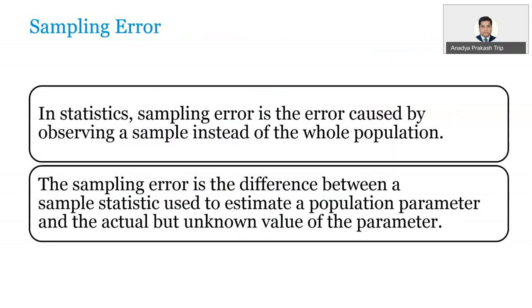We may be a little bit far or closer — up and down — from the true reality. This little bit of difference is due to the sample. If we had evaluated the whole population, we may have been able to pinpoint the actual reality. Due to the sample, if we are a little bit up or down, far or closer, this small difference between the true reality and our estimated value from the sample is the sampling error. This error happens due to the limitation of the sample and is called sampling error.